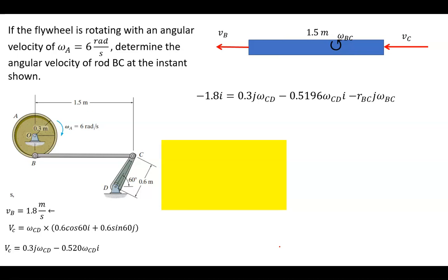Now we break this up into our i and j components. We're going to break it up looking at the i components. So negative 1.8 i equals negative 0.5196 times the angular velocity of CD. So one unknown. The angular velocity of CD, the crank, is 3.46 radians per second.